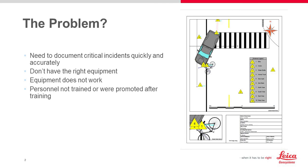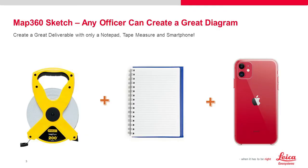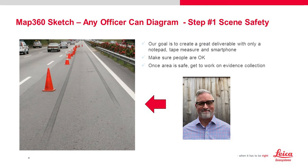What we're going to do today is create a diagram — a car versus bike scenario — and show you how you can do that without any fancy equipment: just a tape measure, a notebook, and your phone. We're going to pretend this is a real-life scenario where an accident happens nearby, we make sure the area is safe, and then get to work collecting evidence.